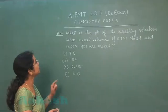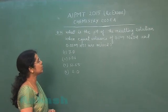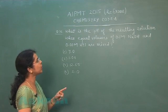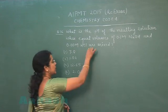So next question is question number 36. What is the pH of the resulting solution when equal volumes of 0.1 molar NaOH and 0.01 molar HCl are mixed?